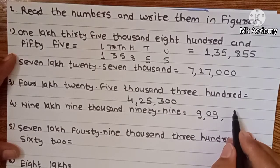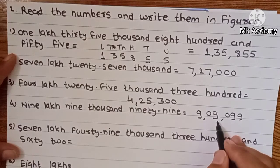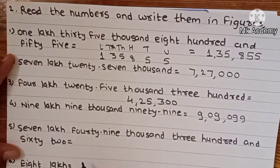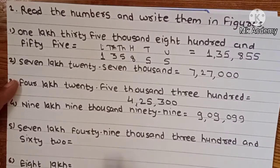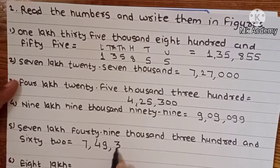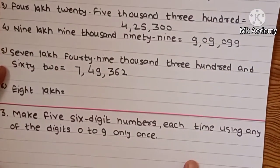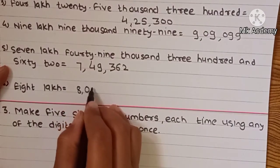Example 4: nine lakh nine thousand and ninety-nine — 9,09,099. Example 5: seven lakh forty-nine thousand three hundred and sixty-two — 7,49,362. Example 6: eight lakh — 8,00,000.